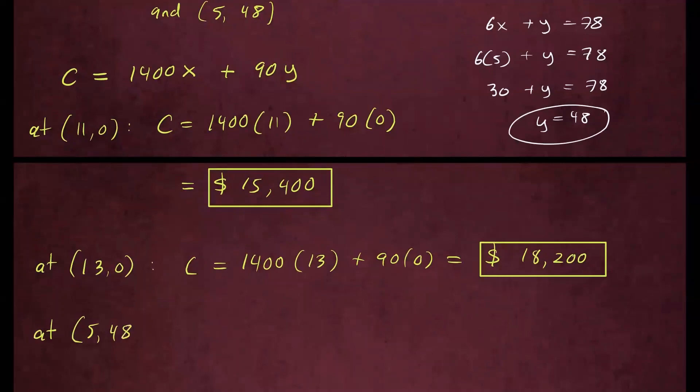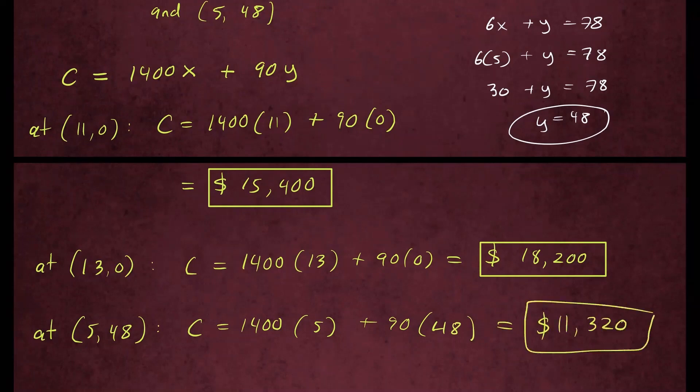So (5, 48). The cost would be 1,400 times 5 plus 90 times 48. And after you put this in your calculator, you should get about $11,320. So the minimal cost will be renting 5 buses and 48 vans. The cost will be $11,320.